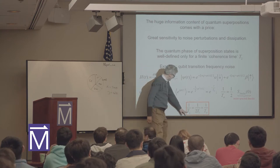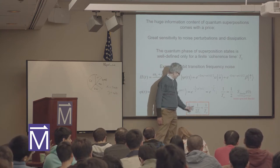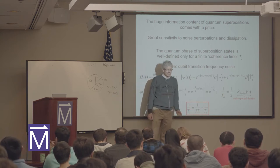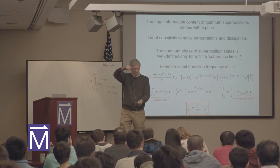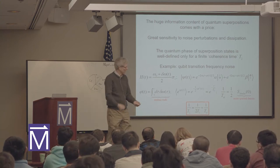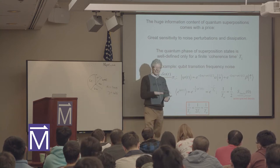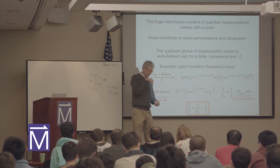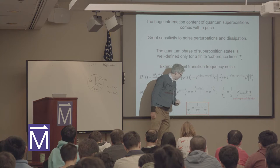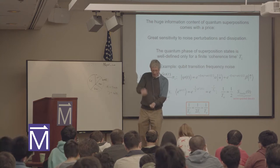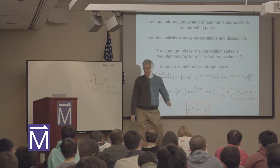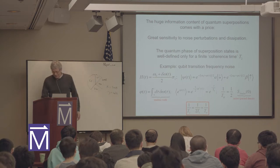In NMR language, one over T2 has a contribution one over T-phi from pure dephasing — the frequency noise. It also has a contribution from decay of the excited state to the ground state, like by spontaneous emission of a photon. That will also destroy the superposition, putting you just in the ground state. That comes with a factor of one-half, because one over T1 is the rate of energy decaying. That's an example of an error.